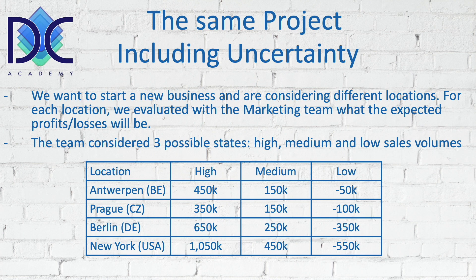How do we define high, medium, and low volumes? For Prague, high could be tourist season, medium when there are fewer tourists, and low when people are typically going to different places. For a ski area, high sales would be during school holidays, medium during the ski season outside those holidays, and low at the beginning or end of the season when snow is uncertain and fewer people are traveling.